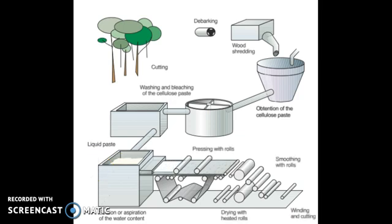Next step. The resulting paste is pressed and laminated into a machine until it becomes a paper sheet. Pressing the paste with rolls, presionando con rodillos, que cada vez consiguen una lámina más fina. Drying and smoothing rolls are employed for this process. Drying the paste with heated rolls and smoothing with rolls.